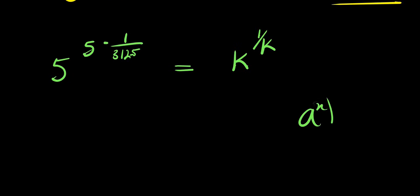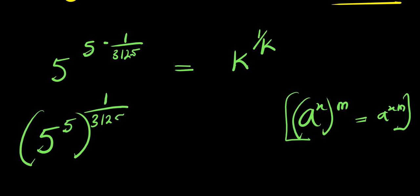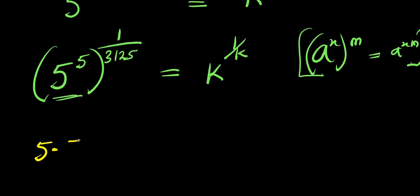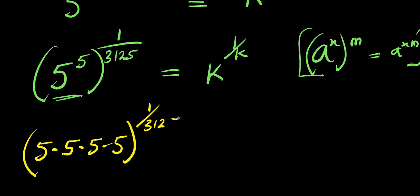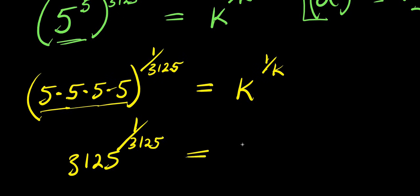Remember, if you have a to the power of x, raised to the power of n, equals a to the power of x times n. So this is 5 to the power of 5. This is 3125 to the power of 1 over 3125, equals k to the power of 1 over k. So 5 to the power of 5 — that is 5 times 5 times 5 times 5 times 5 — raised to the power of 1 over 3125, equals k to the power of 1 over k. So from here, 25, 125, 625, 3125, raised to the power of 1 over 3125, equals k to the power of 1 over k.